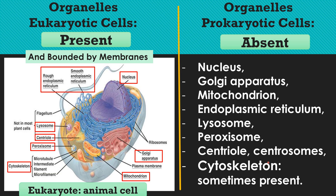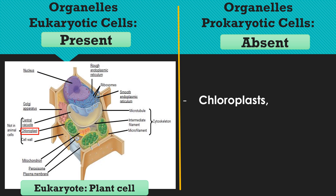Other membrane-bounded organelles present in eukaryotic cells but absent from prokaryotic cells include mitochondria, endoplasmic reticulum, lysosomes, peroxisomes, centrioles, and centrosomes. The cytoskeleton is present in eukaryotic cells and sometimes present in prokaryotic cells. In plant eukaryotic cells, chloroplasts are also present but absent from prokaryotic cells.